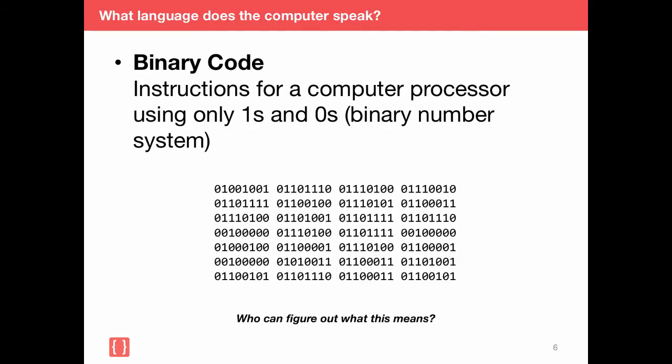As mentioned, the CPU pretty much only understands ones and zeros. Now, imagine you want to program your computer and you have to write the instructions as it's shown on this slide. Looks pretty terrible, doesn't it? There's no way we want to write our computer programs in ones and zeros.